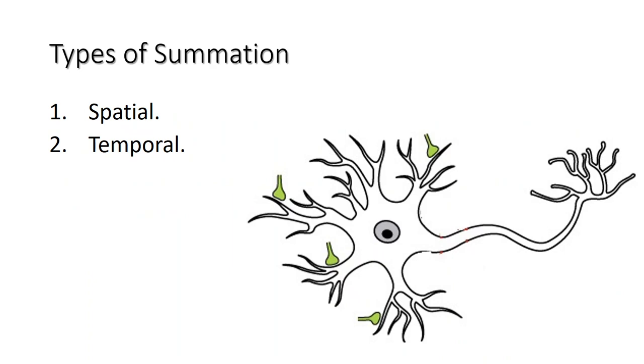Summation can be spatial or temporal. Spatial summation is associating the activity of multiple inputs to a neuron with each other, meaning that it can be the result of multiple graded potentials at different locations on the neuron.